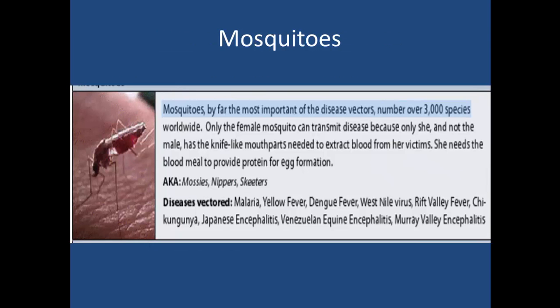So what are some of these diseases and what are some of the vectors that exist? By far the biggest ones are mosquitoes. There are over 3,000 species worldwide; not every single one of them causes disease. Several species of the Aedes and Aedes aegypti mosquito can cause disease. They cause diseases such as malaria, yellow fever, dengue, West Nile, Rift Valley fever, chikungunya, Japanese encephalitis, Venezuelan equine encephalitis, Eastern equine encephalitis, and so on.